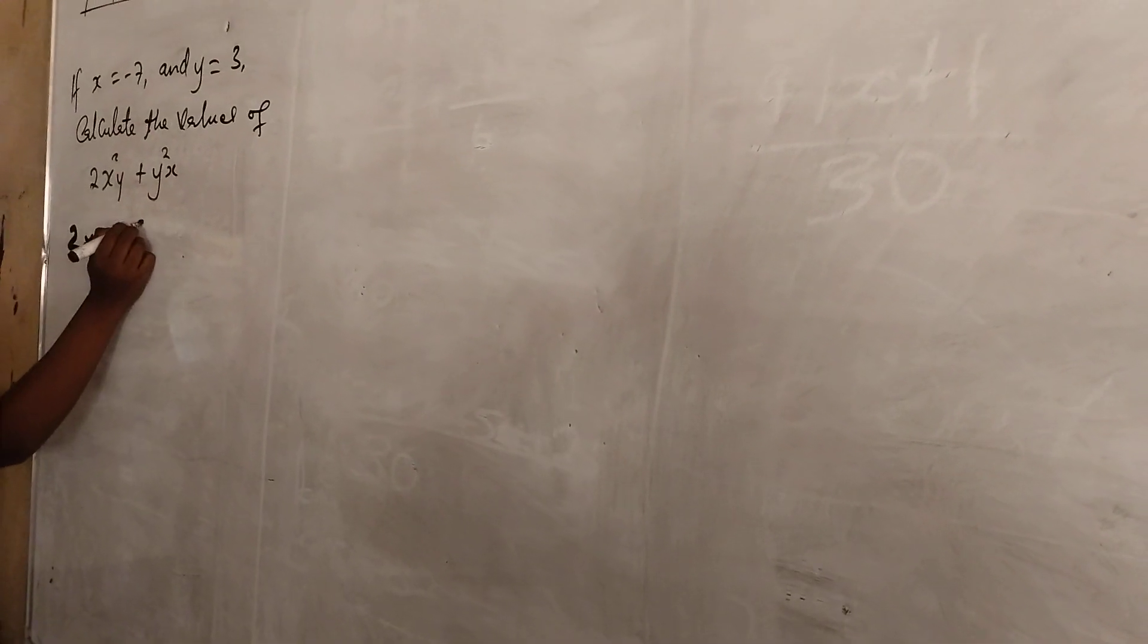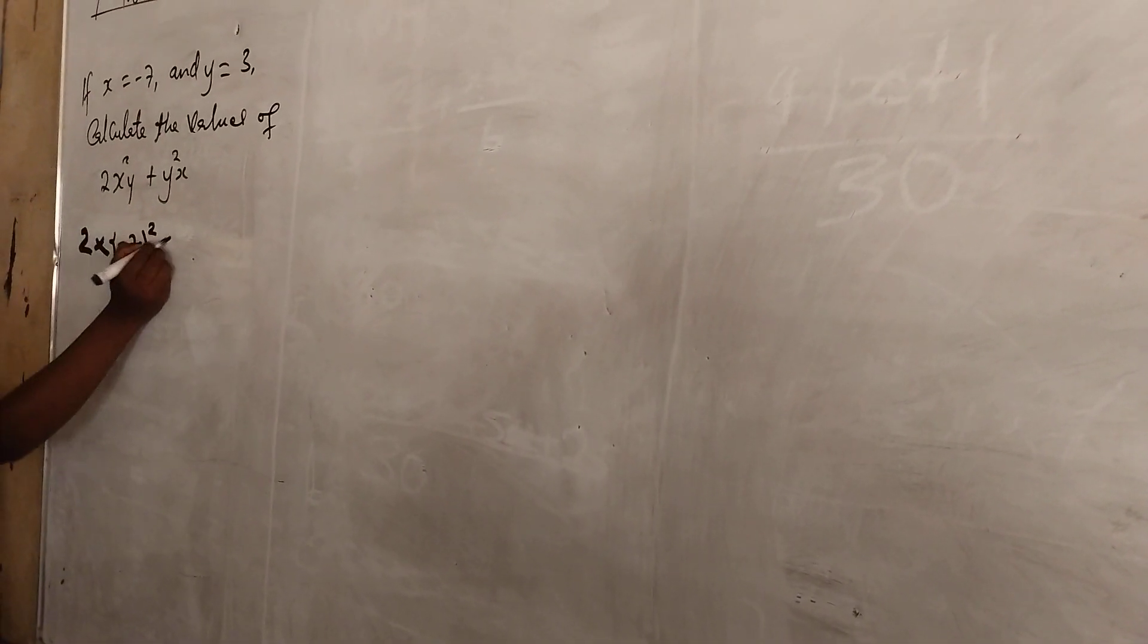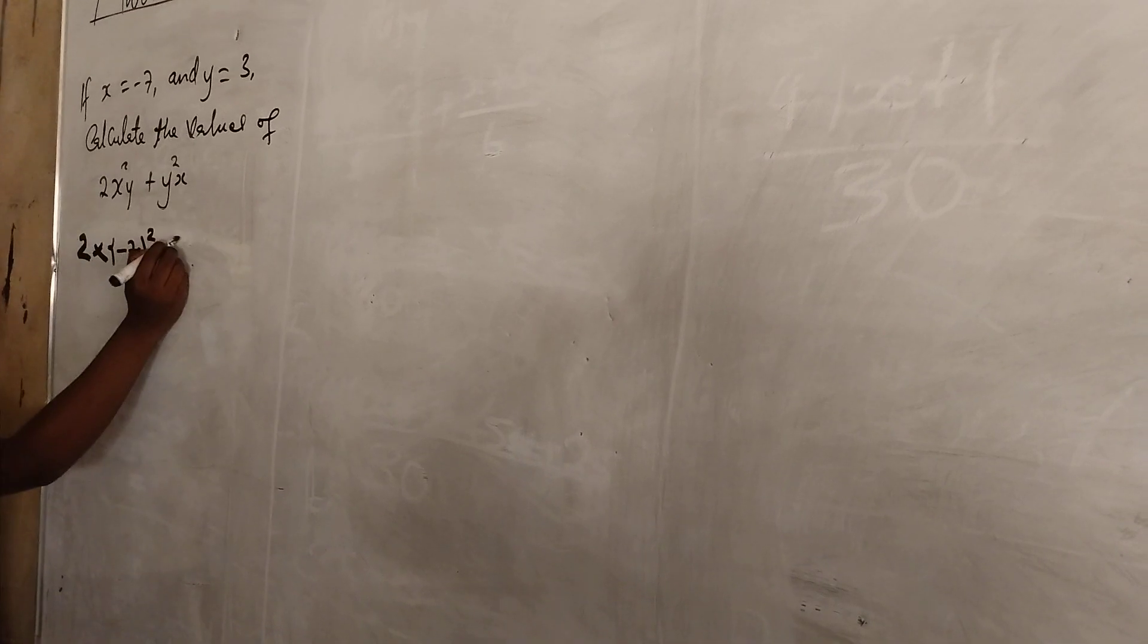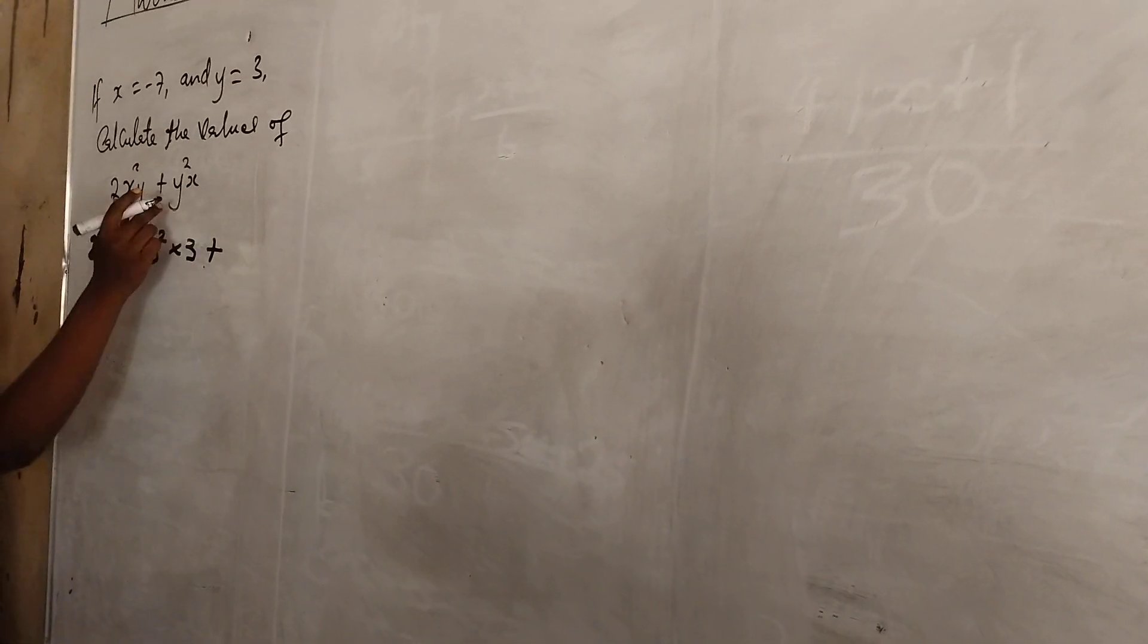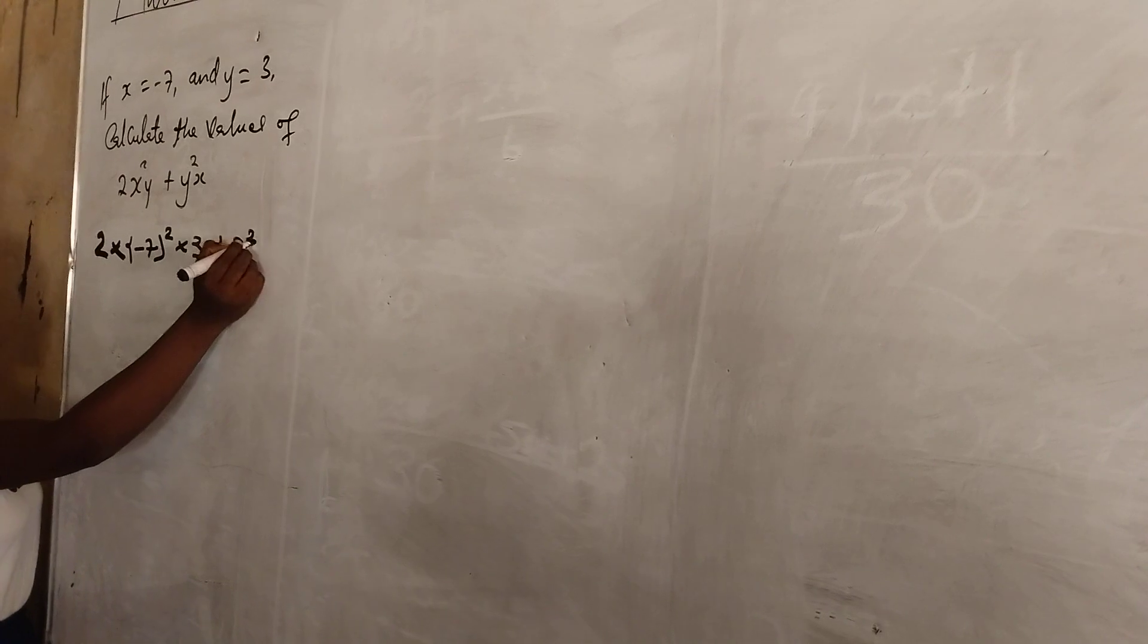Replace the value of x: 2 times minus 7 raised power 2, times y is 3, plus y raised power 2 is 3 raised power 2.